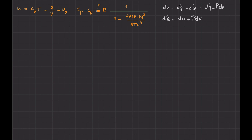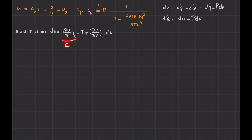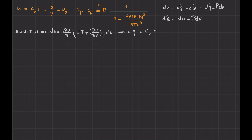If I consider U as a function of T and V, then dU can be written as the partial derivative of U with respect to temperature when volume is kept constant, times dT, plus the partial derivative of U with respect to volume when temperature is kept constant, times dV. This first partial derivative is just the definition of C_V. So D-prime Q equals C_V dT plus the partial of U with respect to V at constant T, times dV, plus P dV.